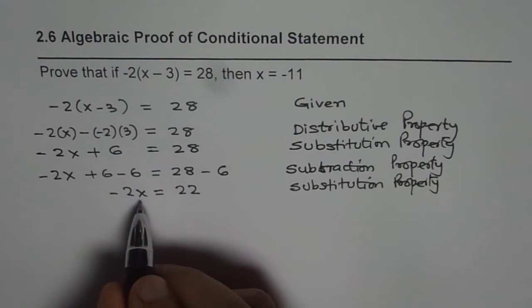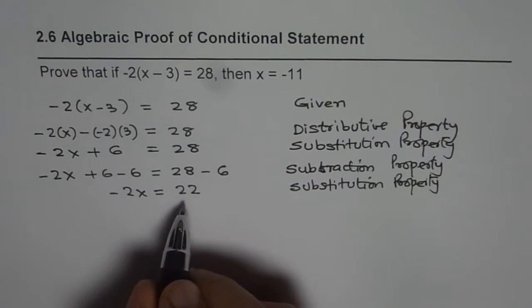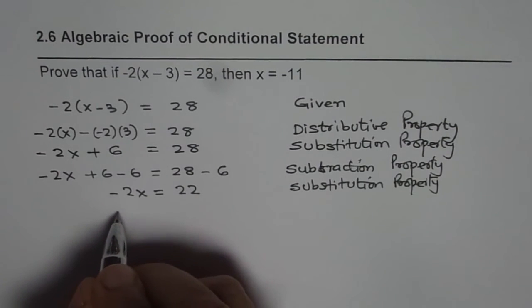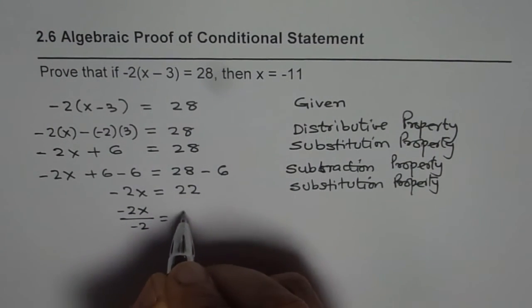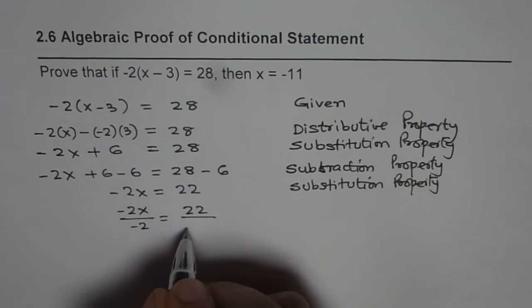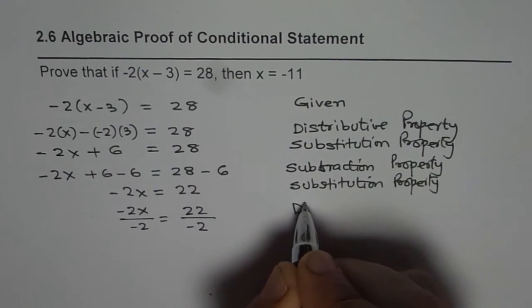To get the value of x, we can divide both sides by -2. We can write this as -2x/-2 = 22/-2. This is division property.